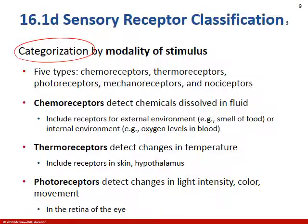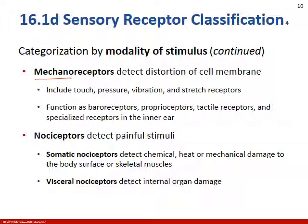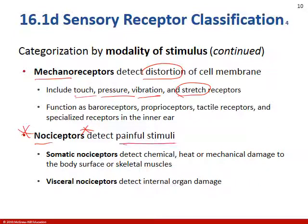Further categorizing receptors based on stimulus — not only is it external or internal, but what type of stimulus causes the receptor to react. A chemoreceptor detects chemicals. A thermoreceptor detects temperature differences. Photoreceptors detect light intensity, color, and movement. Mechanoreceptors respond to any sort of distortion — mostly stretch, but also pressure, vibration, and touch. And the nociceptor is a pain receptor.